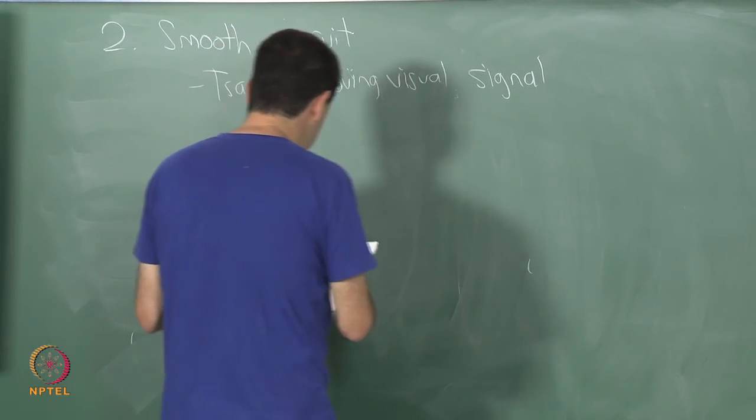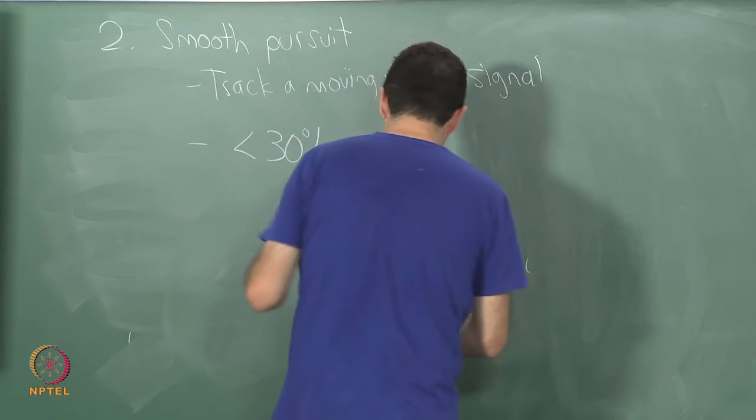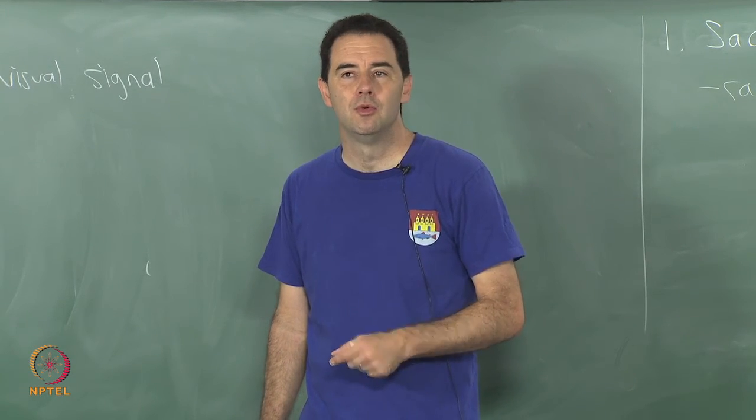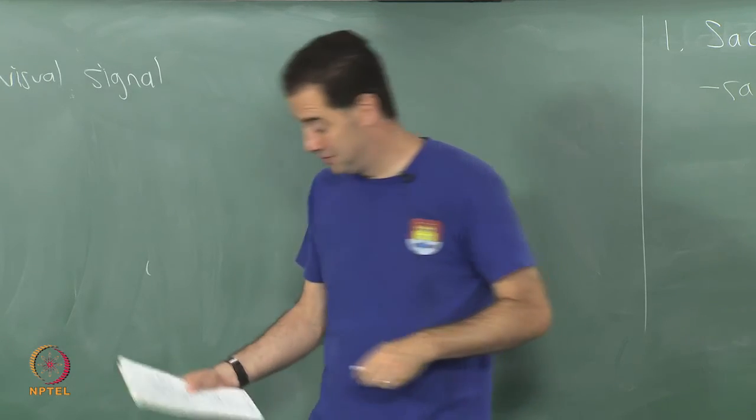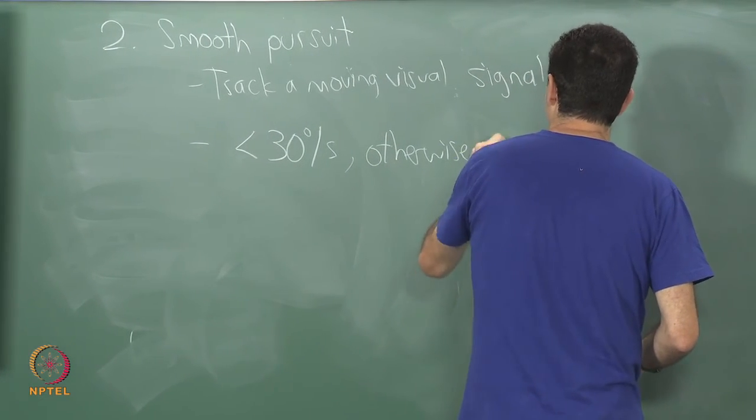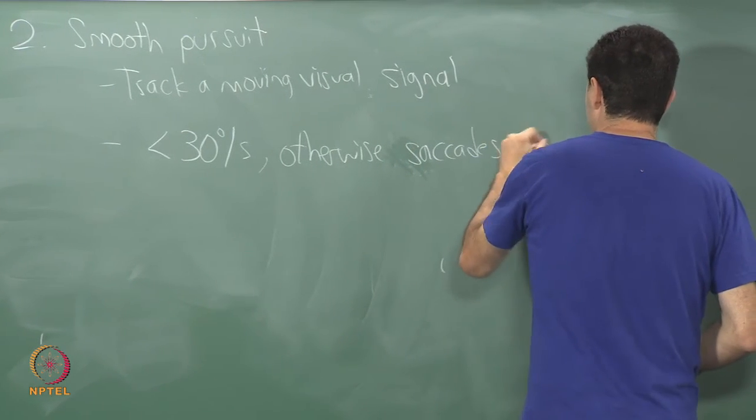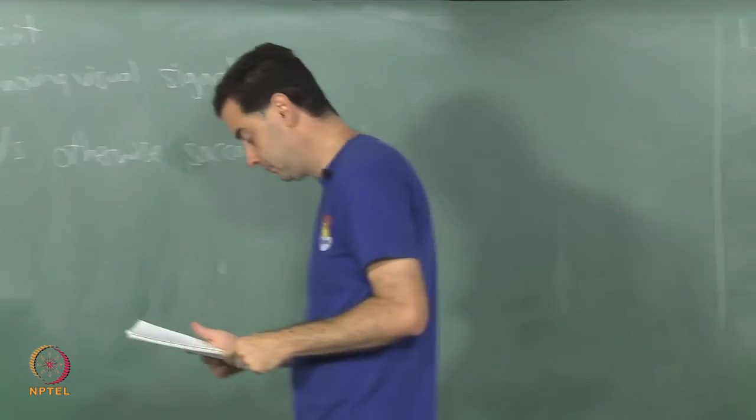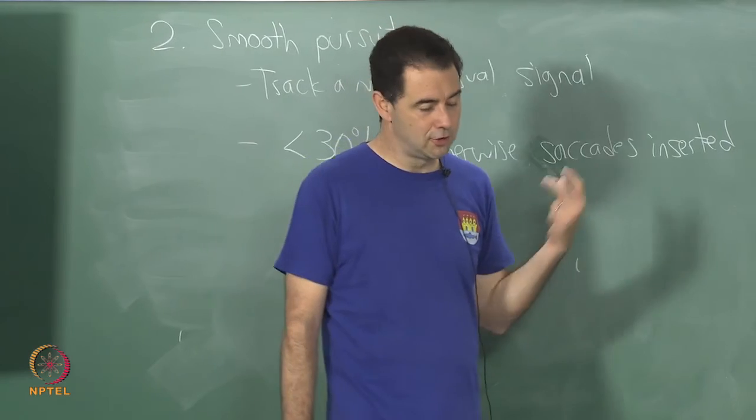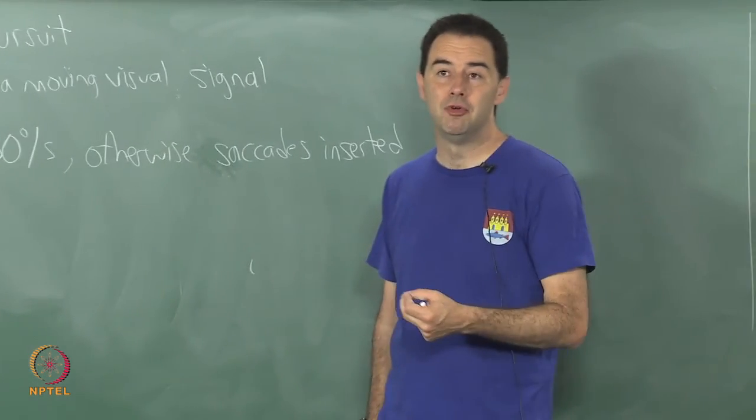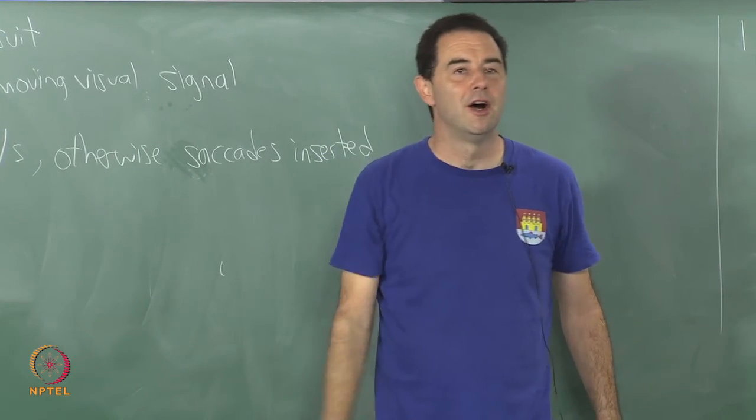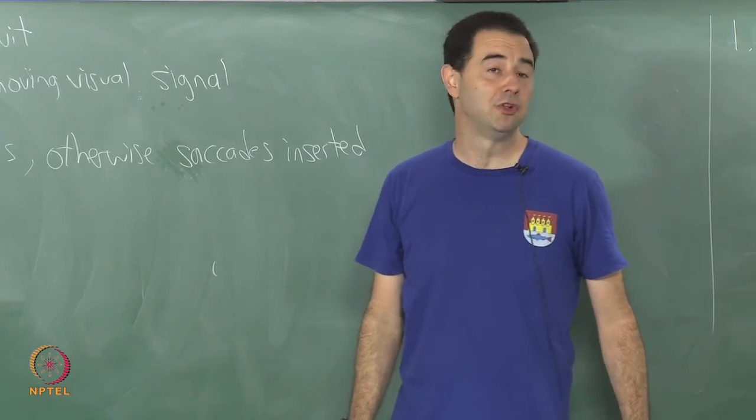So these motions are significantly slower, they are less than 30 degrees per second and if you are trying to track something that is faster than that with your eyes what will happen is that some saccades will get mixed in. So the eye will have to jump ahead to catch up. So sometimes, so I will say otherwise saccades are added, saccades are inserted. The main reason for doing this is to reduce motion blur. So you can, this attempts to give a more stable image on the retina as the object that you are tracking or whatever features they are as they are moving, to make that appear to be a stable image, to make it look motionless as far as your retina is concerned.